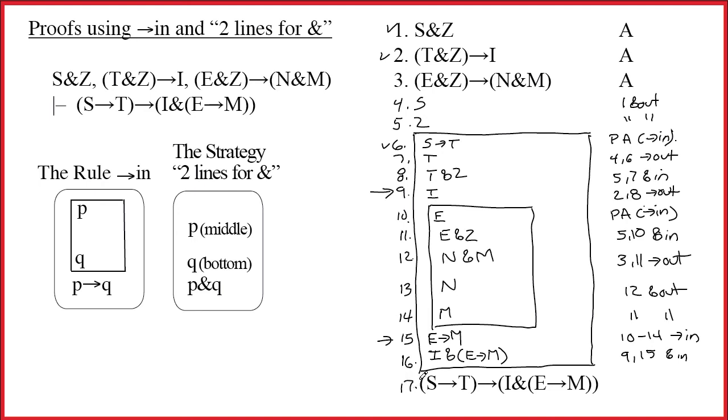And then the justification for 17. It'll be 6 through 16. And the name of the rule arrow in. And we're done. I hope you found this to be a pretty easy proof. Enjoy the studying.